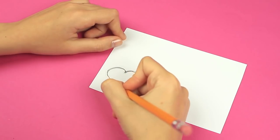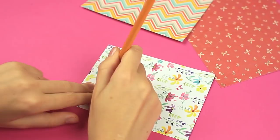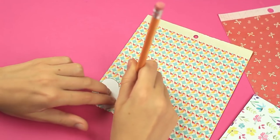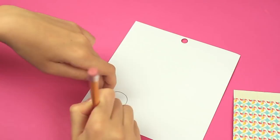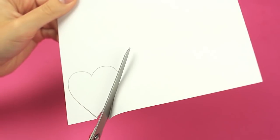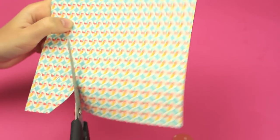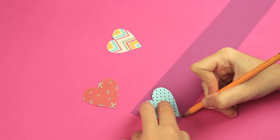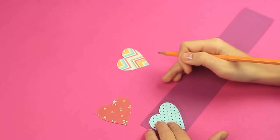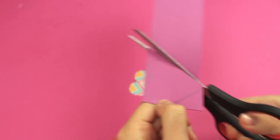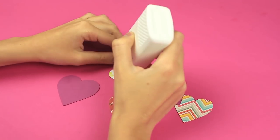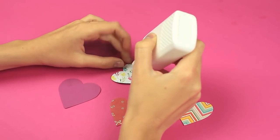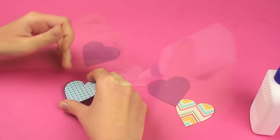Make a heart template. Trace it on differently patterned scrapbook paper to get three different hearts. Cut them out. Trace the heart on colored paper a bit beyond the edge to get a similar bigger element. Make three of the same details. Attach smaller hearts to the bigger ones.